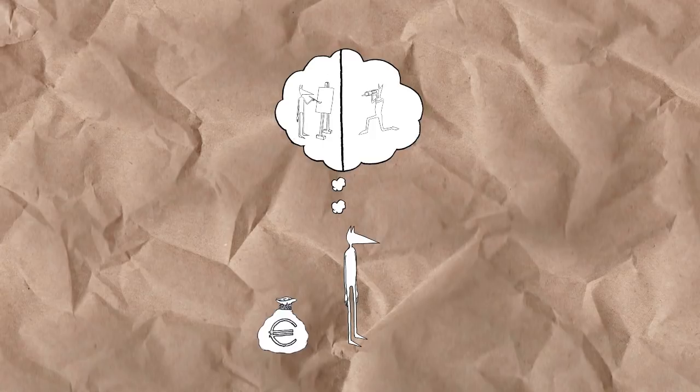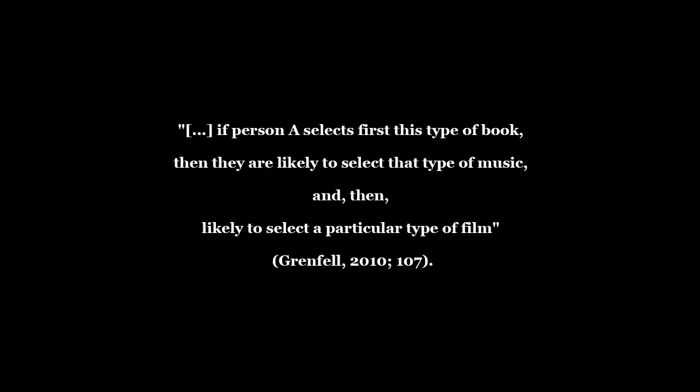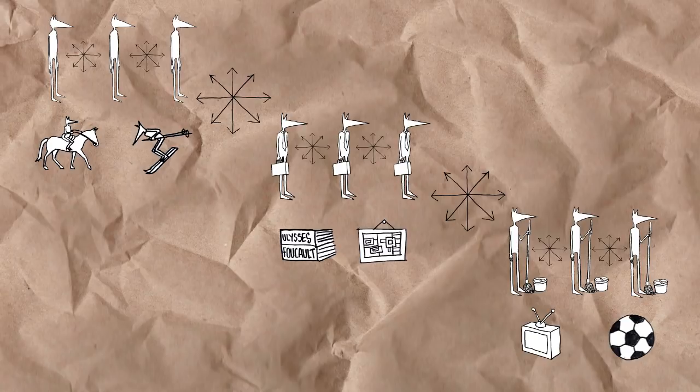This is related to the structuring logic of association, according to which, if person A selects first this type of book, then they are likely to select that type of music, and then likely to select a particular type of film. Equally, there exists a logic of difference, whereby person A selects a book, because it is not what person B would select. For Bourdieu, these strategies of distinction are instrumental in the symbolic domination of lower classes by higher classes. They primarily emerge in parallel with the societal distribution of inherited economic capital, and serve to reproduce these economic distinctions through cultural practices.